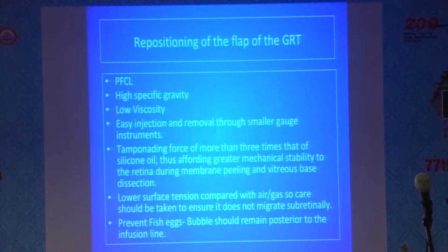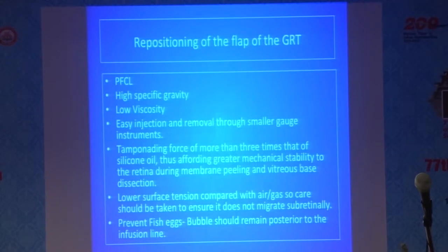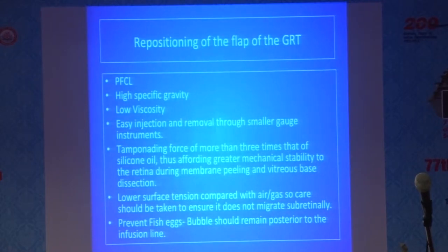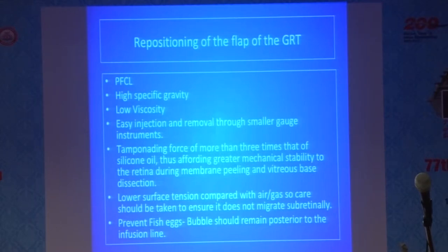The second important maneuver during vitrectomy is to reposition the flap of the giant tear. We have moved on from the era of prone-position surgery to inverting the flap, because of PFCL. PFCL is a high-specific-gravity liquid with lower viscosity, allowing easy injection and removal through smaller gauge instruments. Its tamponading force is more than three times that of silicone oil, affording greater mechanical stability during membrane peeling and vitreous base dissection. However, it has lower surface tension compared to air or gas, so care must be taken to prevent subretinal migration. There is also an incidence of fish-egg formation when the PFCL bubble breaks into multiple small bubbles; to prevent this, PFCL should be injected slowly and remain posterior to the infusion line.